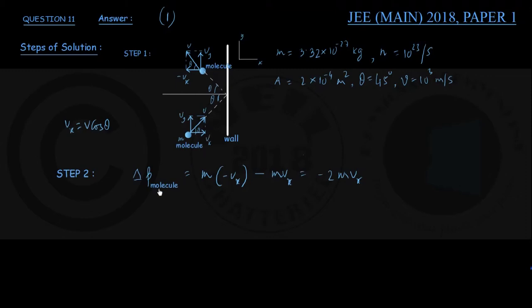Now what is the corresponding momentum change of the wall per collision? For that, recall the principle of conservation of linear momentum. This says that for the molecule plus wall system in the absence of external forces...